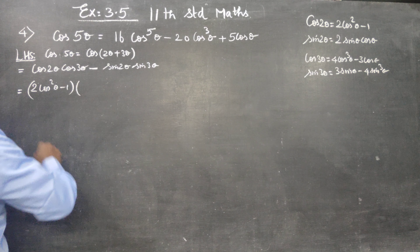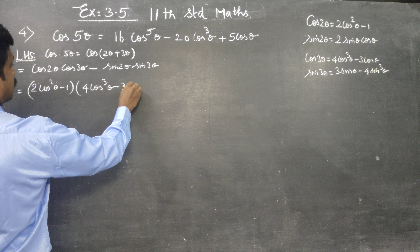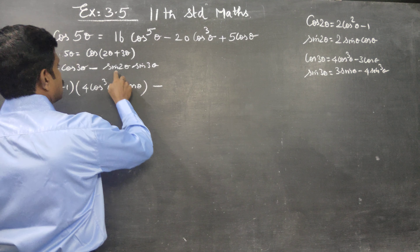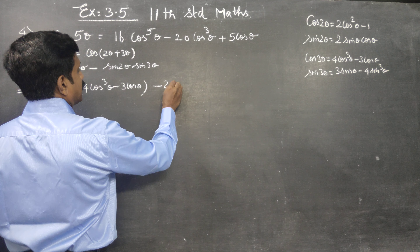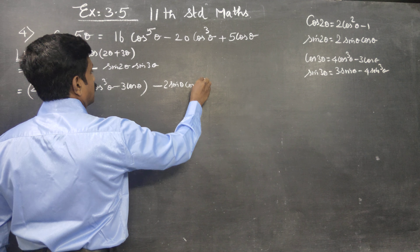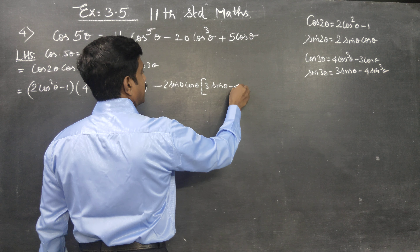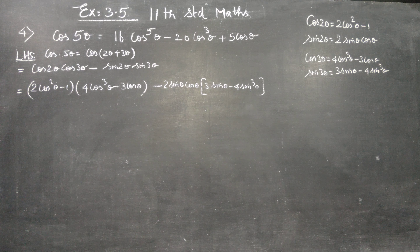So cos(2θ + 3θ) = cos2θ · cos3θ - sin2θ · sin3θ. Now substituting: cos3θ = 4cos³θ - 3cosθ. sin2θ = 2sinθcosθ. sin3θ = 3sinθ - 4sin³θ.